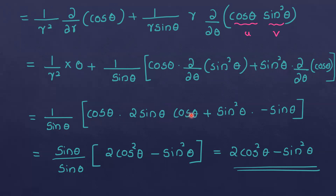Continuing: sinθ derivative gives cosθ sin squared θ derivative as 2 sinθ cosθ. Plus sin squared θ into dou by dou θ of cosθ, which is minus sinθ. Simplifying: sinθ divided by sinθ gives 2 cos squared θ minus sin squared θ. So the final value for the θ term simplifies to 4 cos squared θ minus sin squared θ.